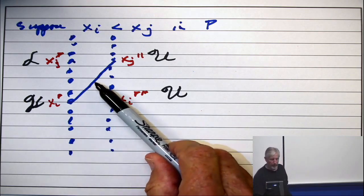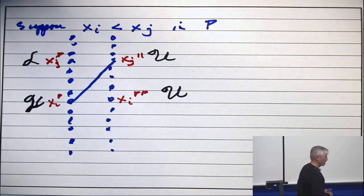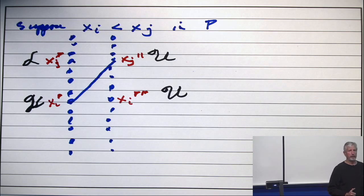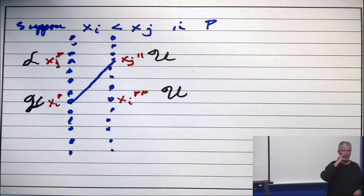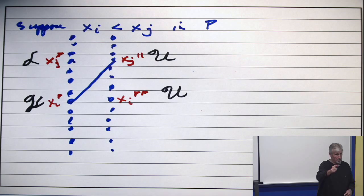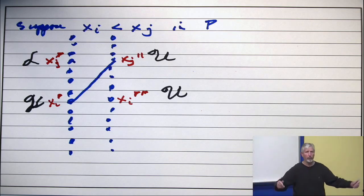What's the flow on that edge? Why'd you say one? On all edges have capacity one? No, capacity one, not flow. All edges have capacity one, not flow. What's the flow on that edge? In that, you know, I've got the optimum flow. I've halted. What's the flow on that edge?